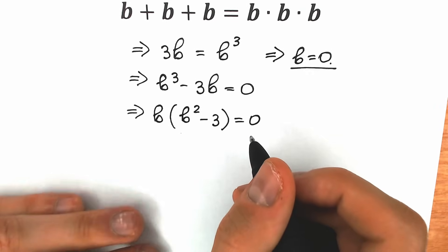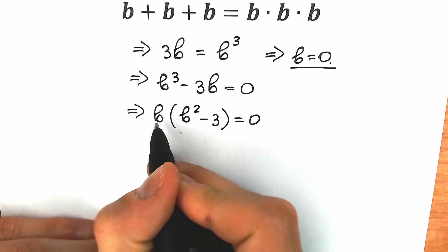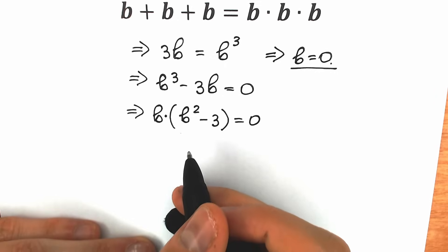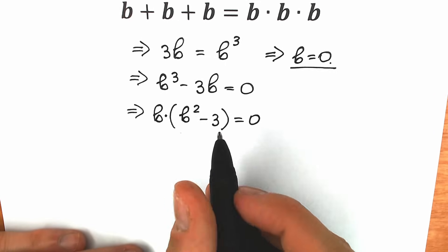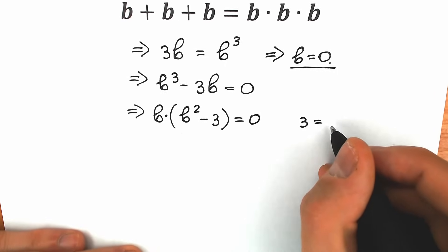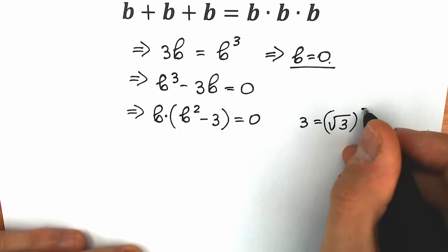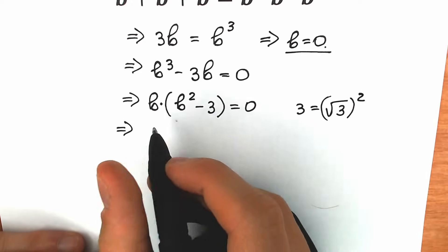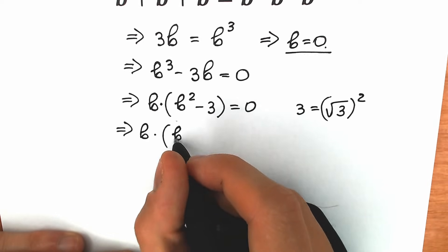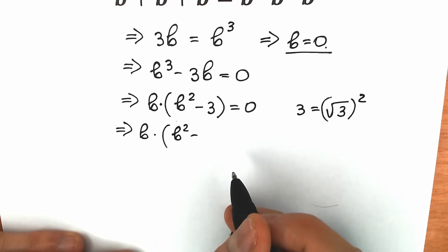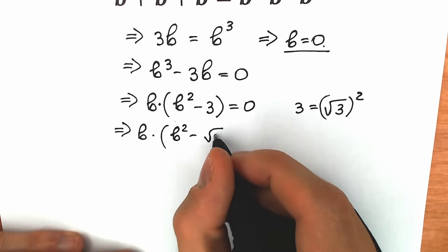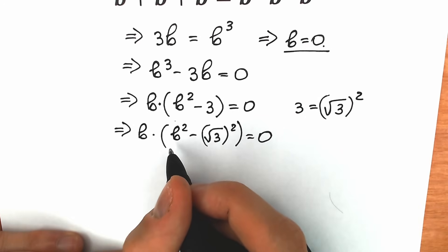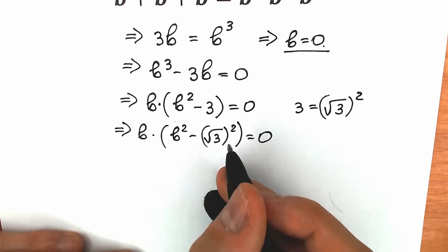From school we know that a product equals zero when the first expression equals zero or the second expression equals zero. But here's a really great trick — this 3 can be written as square root of 3 squared. This is absolutely the same expression, but now we're going to consider it as a difference of squares. So we have b times (b squared minus square root of 3 squared) equals zero.